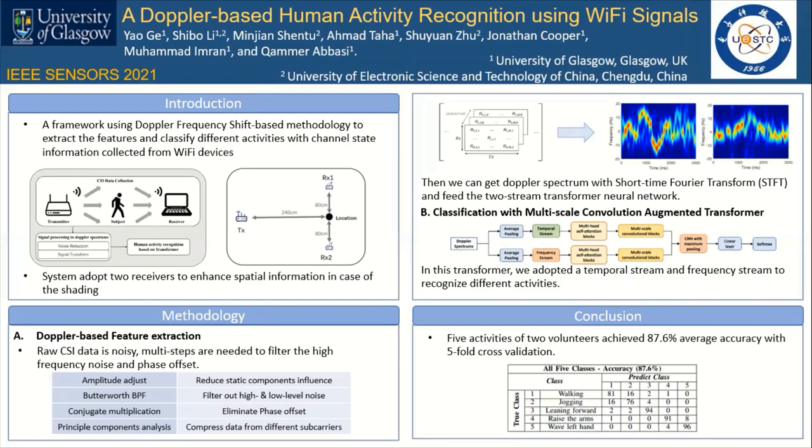To go into more detail in each step: from the raw data to Doppler spectrums, there are a lot of operations needed due to the unstable characteristics of the Wi-Fi network card. As listed in the table, each operation is related to the right-hand side function.